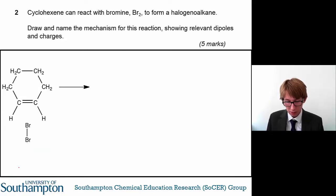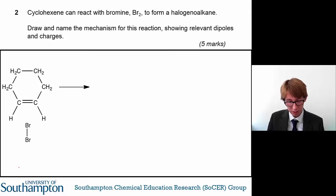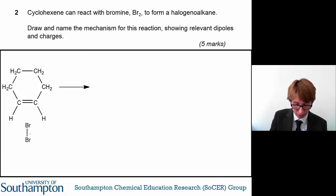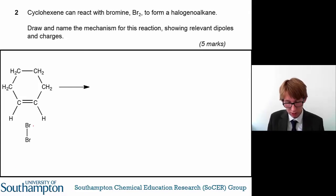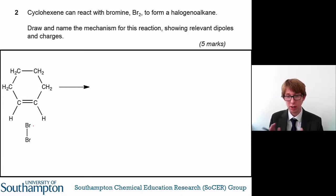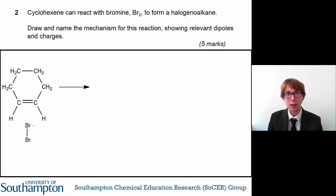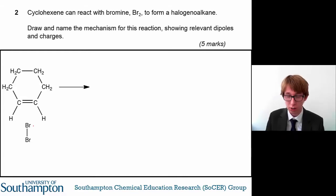You've got an alkene reacting with a halogen. This bromine molecule is non-polar because both atoms have the same electronegativity, so the electron pair lies dead in the middle of the bond. It's purely covalent — a non-polar molecule.